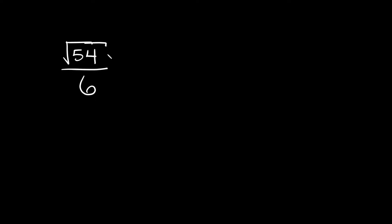The square root of 54 is obviously not a perfect square, so we can't easily take the square root of this. But one thing we can do is think about the number 54 and break that down into its factors. 54 is the same thing as 9 times 6.